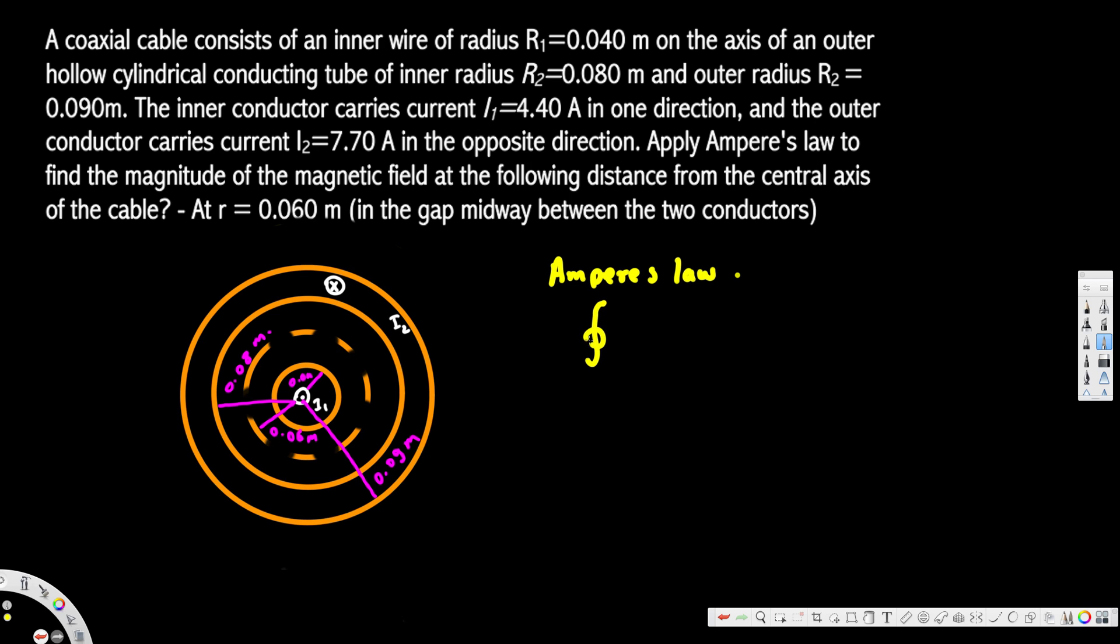The integral of B·ds is equivalent to μ₀ times I enclosed. B is not going to change due to symmetry - it's equal everywhere, so this is a constant. If we integrate ds, we are integrating the line of current.